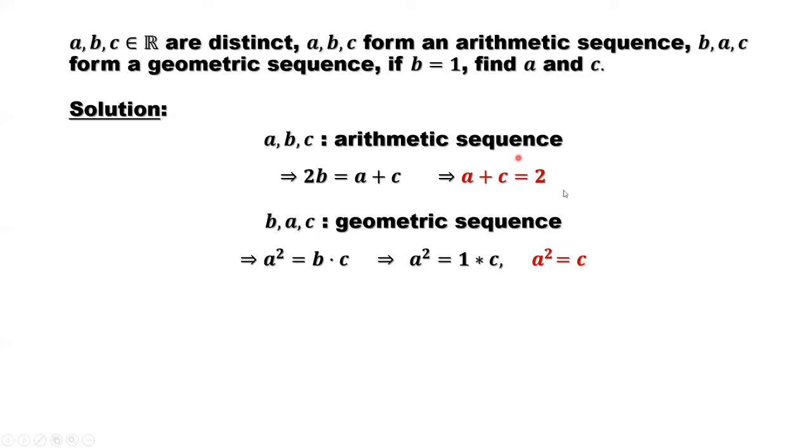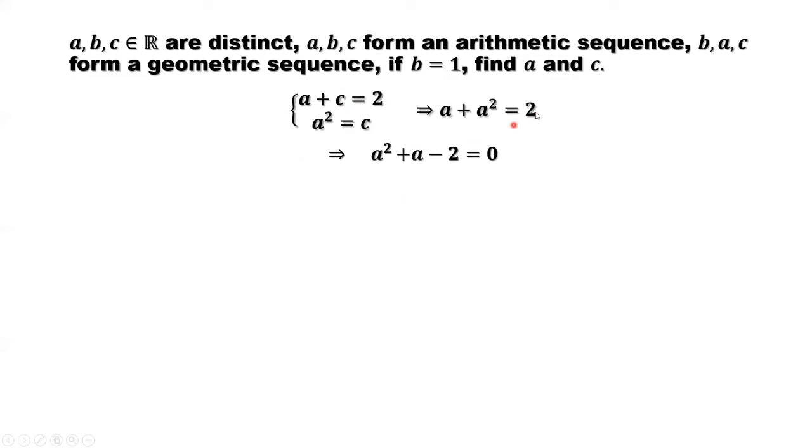We have two results here. We replace C in the first result by A squared. We have A plus A squared equals 2. A squared plus A minus 2 equals 0. This is a quadratic equation. We can easily find the two solutions: A plus 2 equals 0, A equals negative 2. A minus 1 equals 0 implies A equals 1.